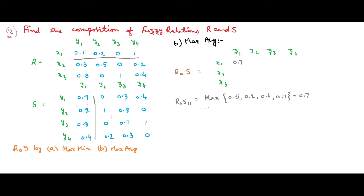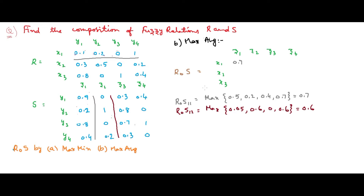Next is R∘S(1,2), which considers x1 and z2. We take the maximum of averages: average of 0.1 and 0 is 0.05, average of 0.2 and 1 is 0.6, average of 0 and 0 is 0, and average of 1 and 0.2 is 0.6. The maximum value is 0.6.